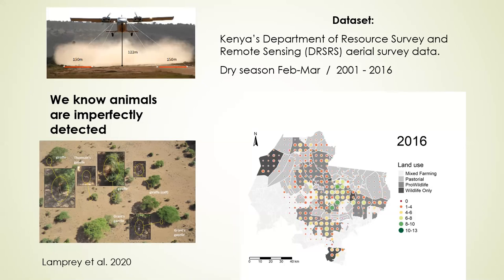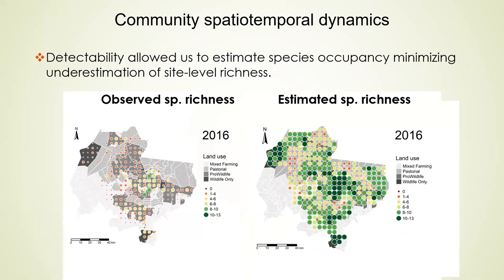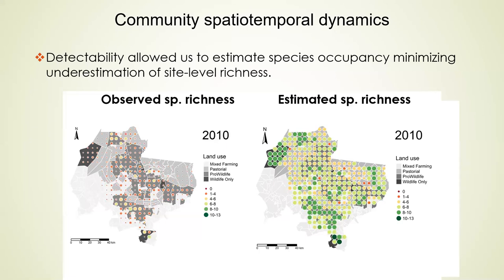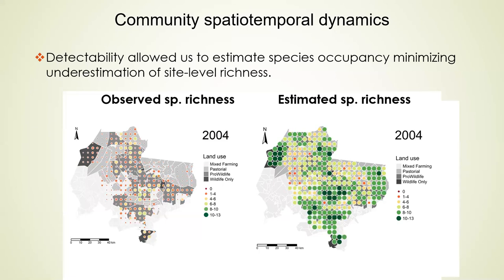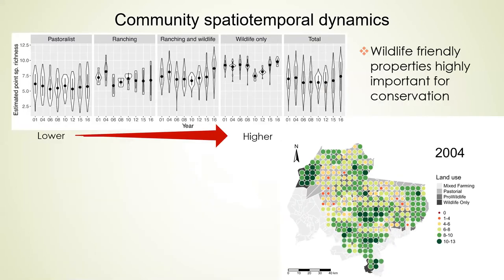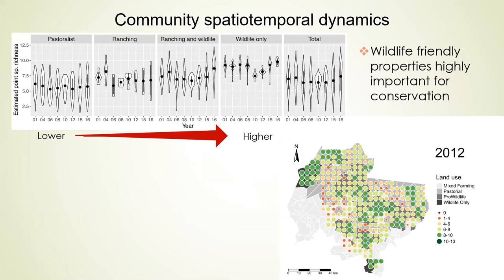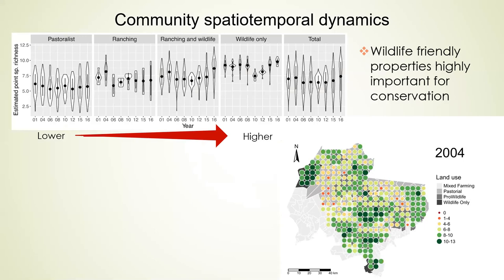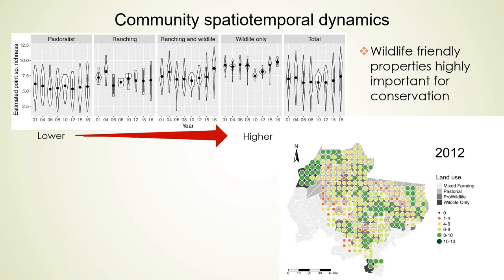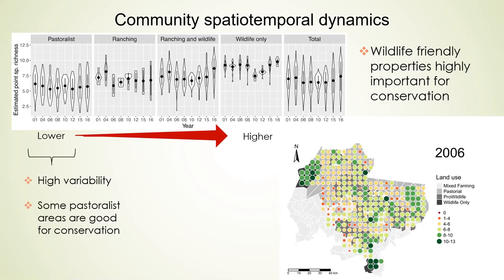After applying these statistical techniques, we obtained better estimates of species richness. That's the map you can see with the green bubbles — a better representation of how wildlife is actually distributed across the landscape. Some interesting results: we didn't observe big trend changes in species richness across time, but we did observe a segregation of different numbers of species across different land uses. As expected, the lower number of species were in pastoralist lands, then ranching, and more in ranching-and-wildlife and wildlife-only areas.